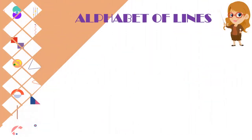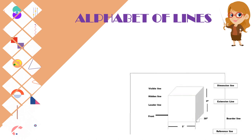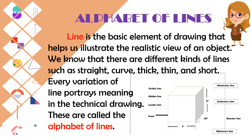Let us proceed to the alphabet of lines. Line is the basic element of a drawing that helps us illustrate the realistic view of an object. There are different kinds of lines such as straight, curved, thick, thin, and short. Every variation of line portrays meaning in technical drawing — these are called the alphabet of lines.